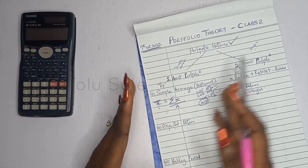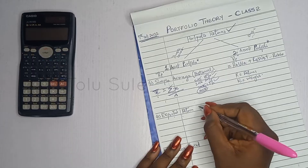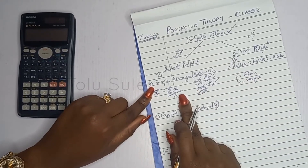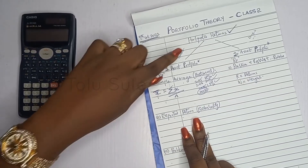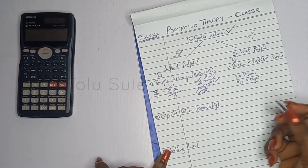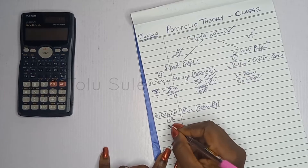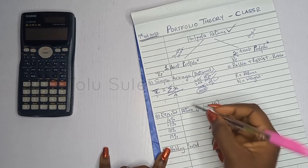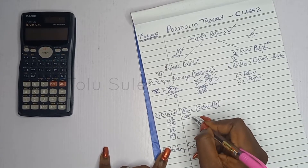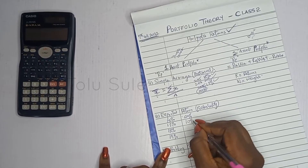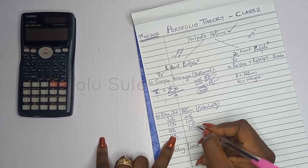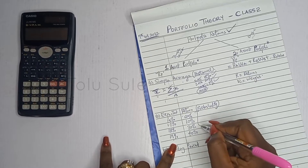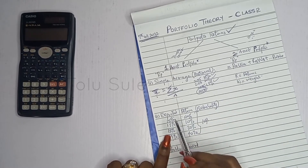How you know which method to use depends on the information given. The next approach is the expected return, which uses probability and is based on the future — not historical data. For example, there might be a 20% chance of making 15%, a 10% chance of 17%, a 30% chance of 18%, and a 40% chance of 19%. All these probabilities must add up to 100%.